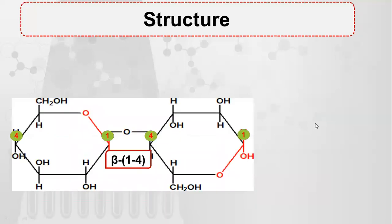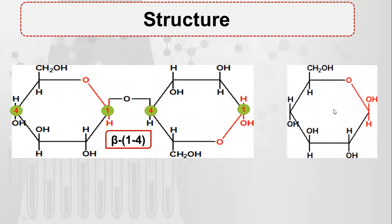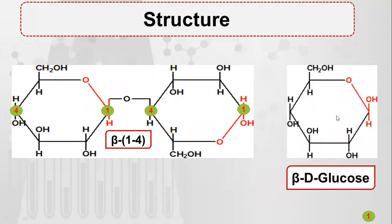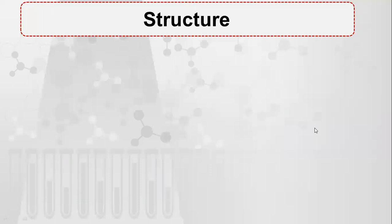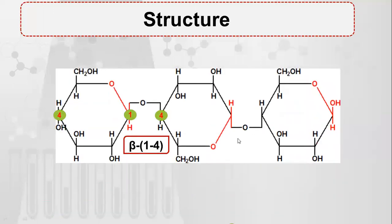Now we add another beta-D-glucose molecule. Carbon number one's OH is below, and carbon number four's OH is also below, so this time there is no need to flip the ring — the bond forms directly. Both OH groups bond together, still forming a beta linkage because these are beta-D-glucose units. When a ring is flipped, it can form bonds on both sides. A new beta-1-4 linkage is formed between carbon one and carbon four.